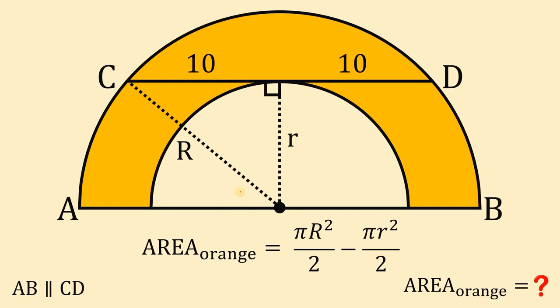So, we have here π capital R squared over 2—this is the area of the big semicircle—minus the area of the small semicircle, which is π small r squared over 2. Let's simplify. We have a common term of π over 2, so let's factor it out.